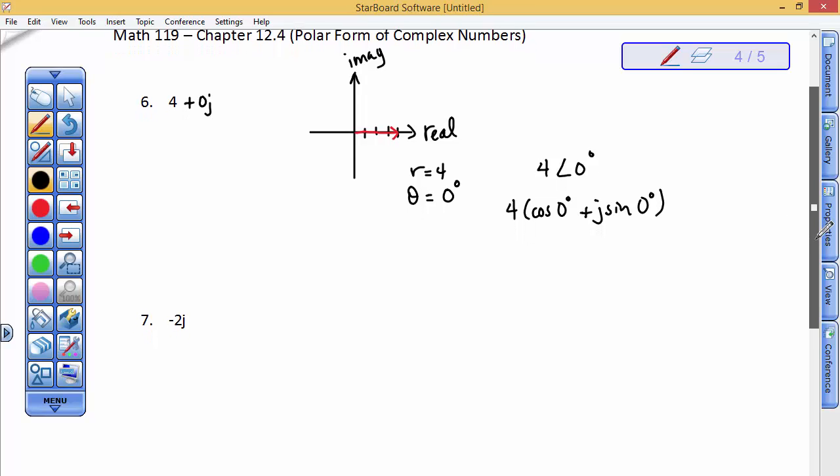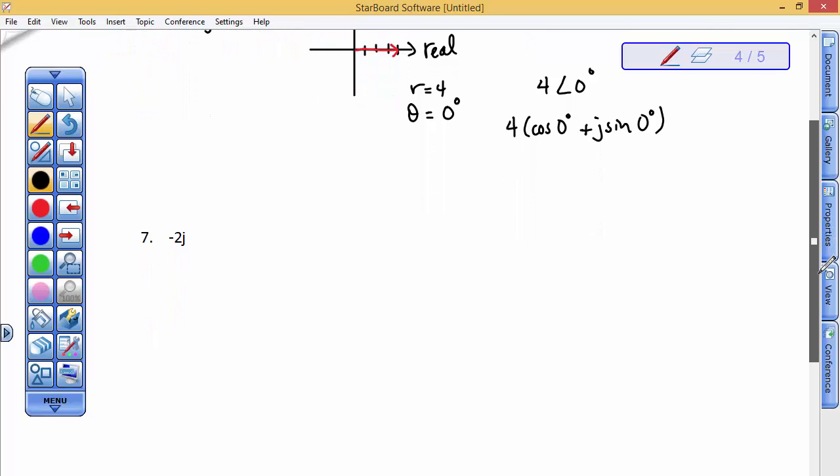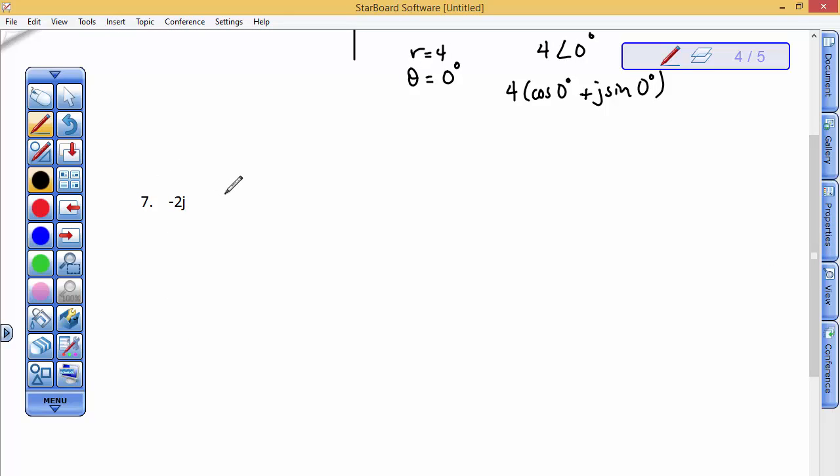Now be careful, when I go put a negative sign in front of here, what I have is 0 minus 2j. So be very, very careful. Because yes, the magnitude is going to be 2. However,